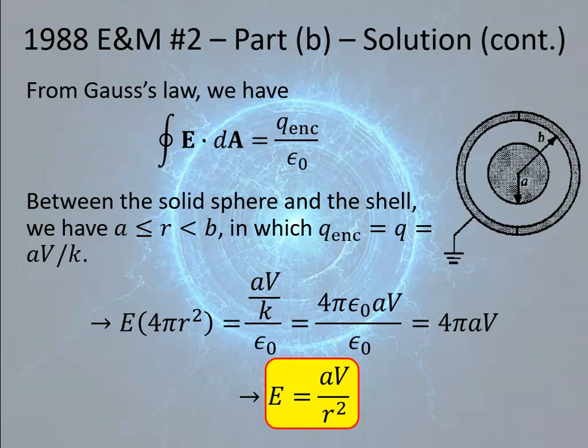Where the points were distributed here on part B, one point was given for writing out Gauss's law correctly in vector form. One point was given for evaluating that the left side is E times 4 pi r squared. One point was given for using the fact that the enclosed charge is equal to the charge of the sphere, and one point was given for the final answer.